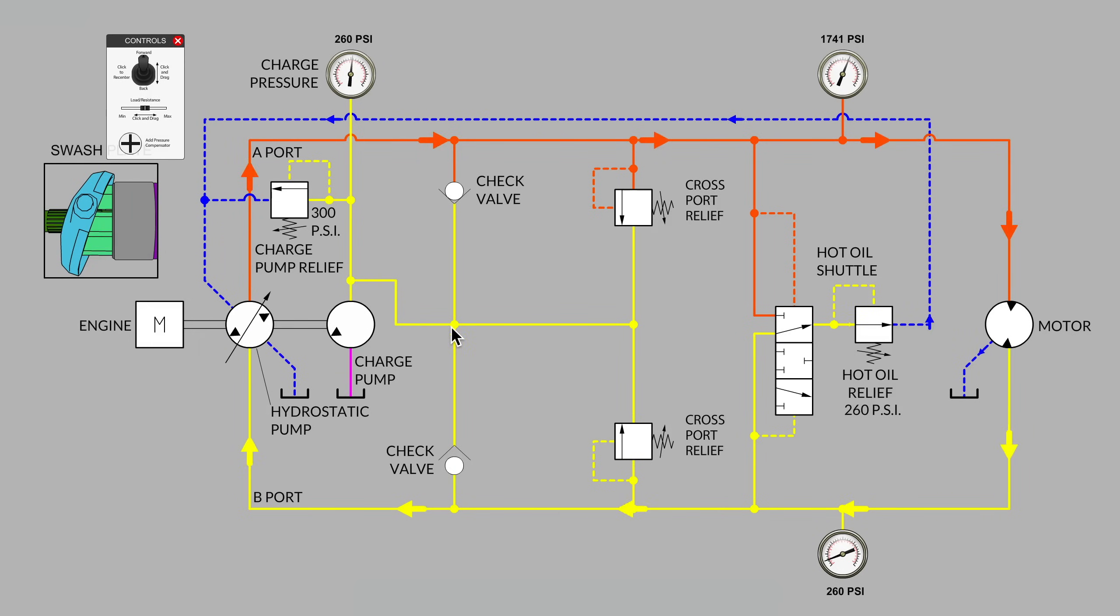If we follow the charge pump flow and find out that is being used to replenish and charge the return side of the closed loop, that's normal. Now, we find out that the pressure on the return side of the closed loop is being held at 260 by the hot oil shuttle relief valve over here on the right side of the circuit. It's set to 260.